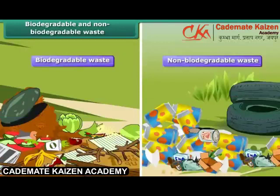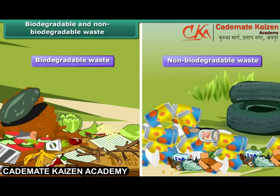Wastes are divided into two categories: biodegradable waste and non-biodegradable waste. Vegetable and fruit skin are biodegradable waste, whereas plastic, metals and glass are non-biodegradable waste.